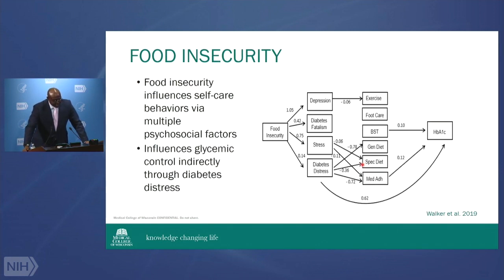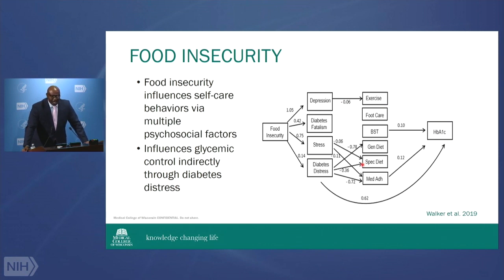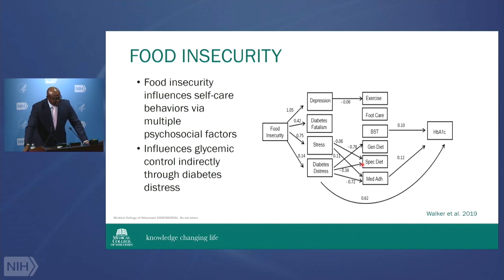Next we began to look at food insecurity. Dr. Walker Wright, now an associate professor with an R01, was then a doctoral student asking how food insecurity impacts diabetes control. In that era, everything was about self-care. This study showed that food insecurity was associated with depression, fatalism, stress, and diabetes distress, which then impacted A1C. Some pathways were direct and others indirect through self-care. This was one of the first studies demonstrating that food insecurity had a direct relationship with glycemic control independent of self-care.